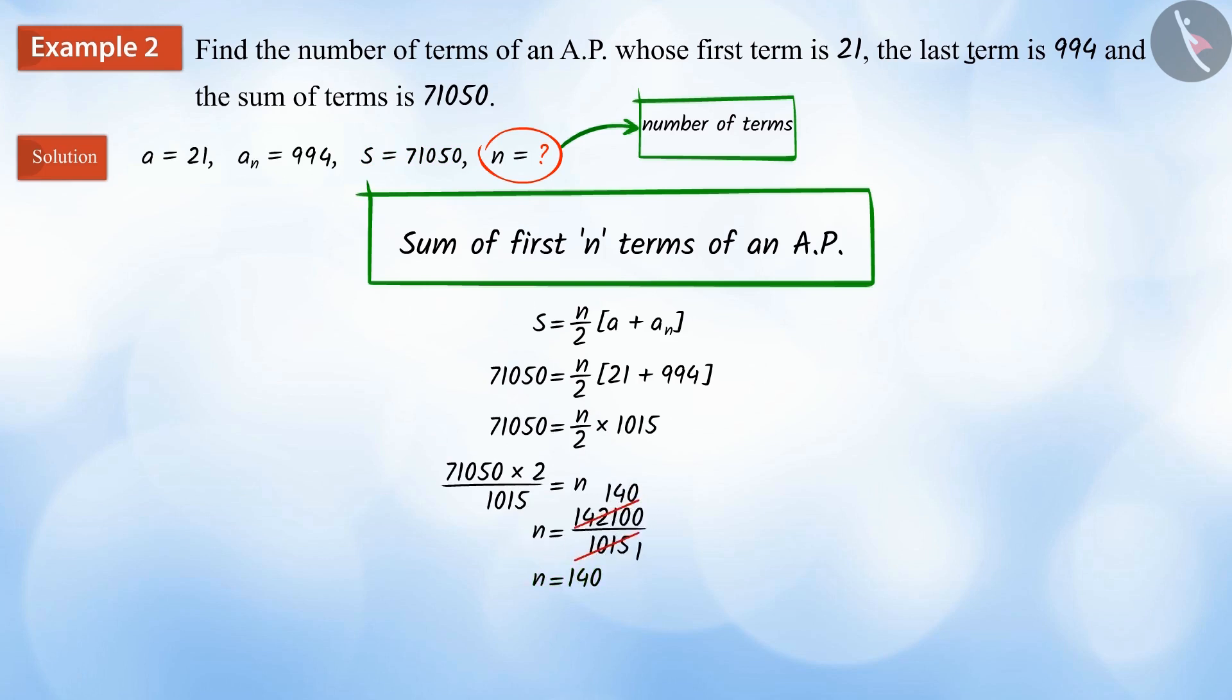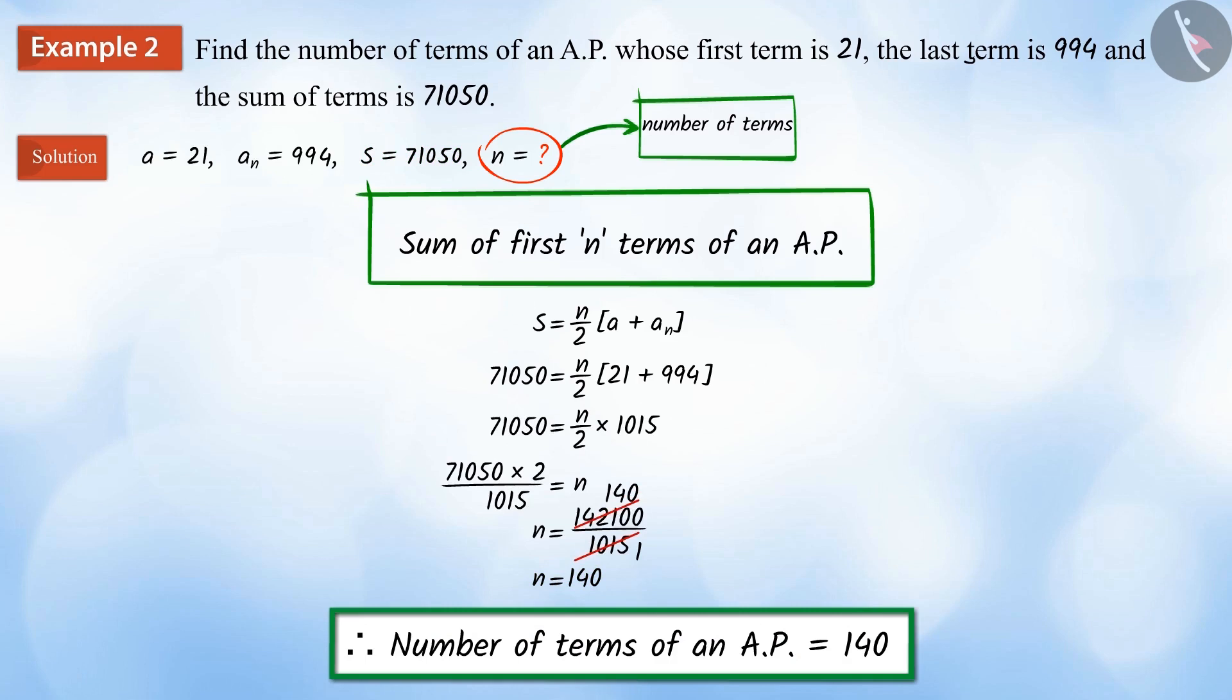Therefore, there will be a total of 140 terms in the arithmetic progression.